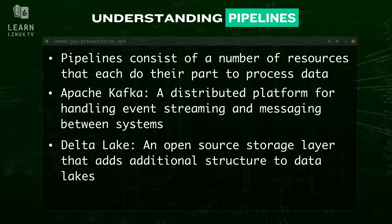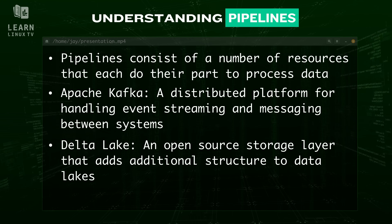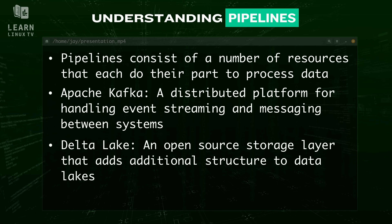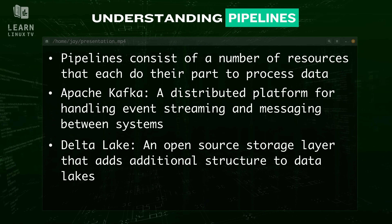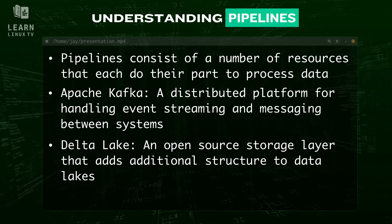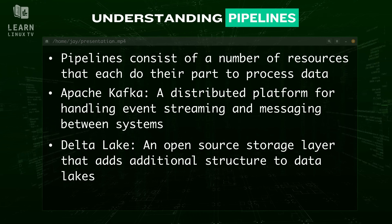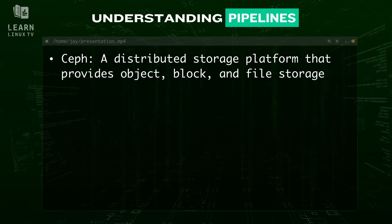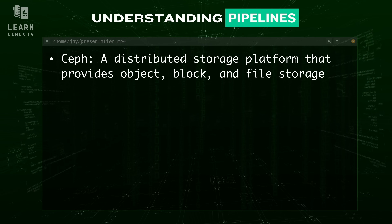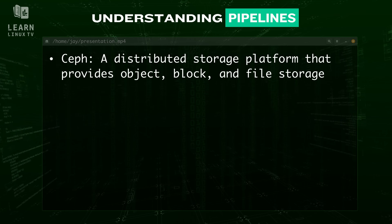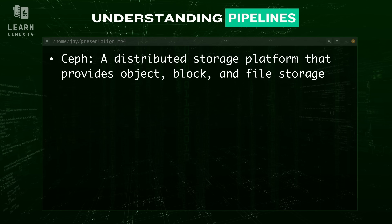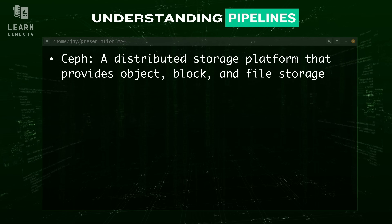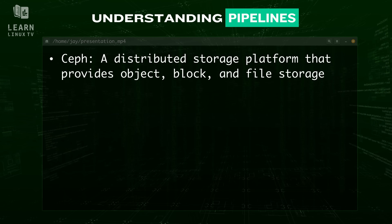Next is Delta Lake, an open source storage layer that adds reliability and structure to traditional data lakes. It supports ACID transactions, schema enforcement, and time travel queries, making large datasets easier to manage. Teams can trust their data while still benefiting from the flexibility of a lake. Then there's Ceph, a distributed storage platform that provides object, block, and file storage in a single system. It's designed to scale horizontally, allowing organizations to store petabytes of data reliably across clusters of commodity hardware, and often serves as a foundation for cost-effective and resilient data storage in big data pipelines.